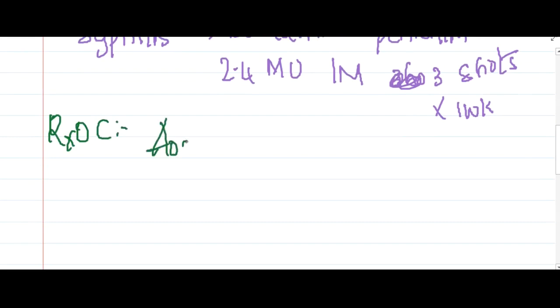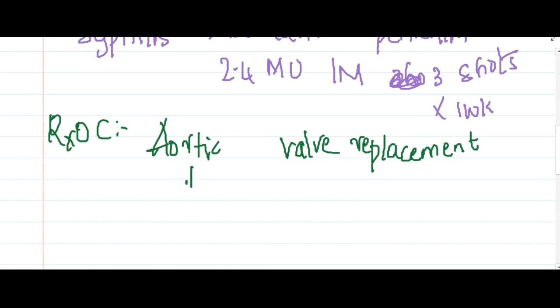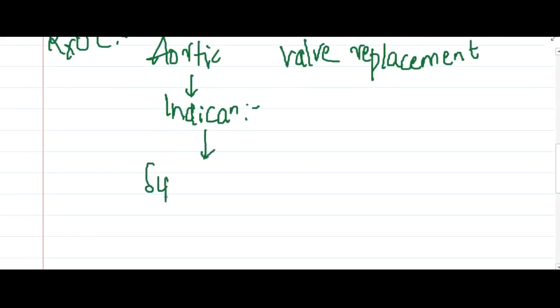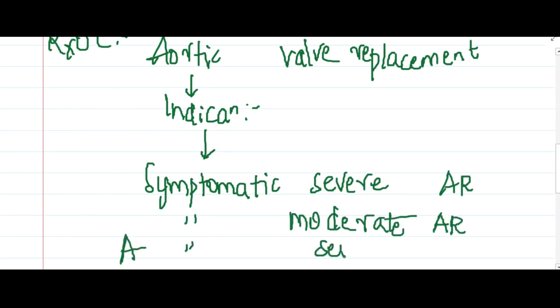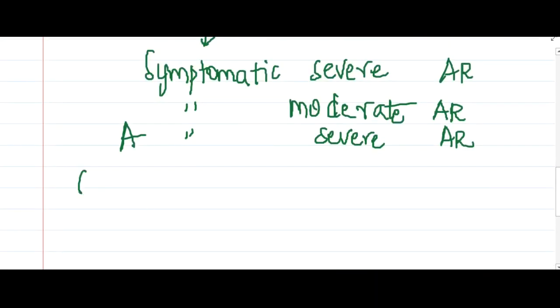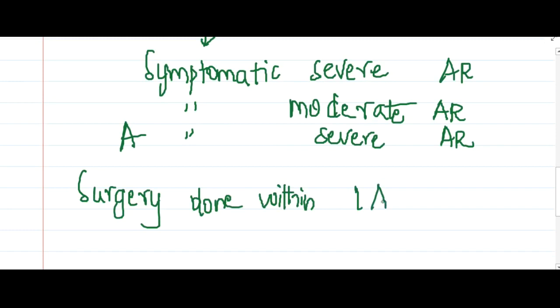The treatment of choice is aortic valve replacement. Indications include symptomatic severe aortic regurgitation, symptomatic moderate aortic regurgitation, or asymptomatic severe aortic regurgitation. Surgery should be done within 1 year of occurrence of chronic aortic regurgitation, and within 24 hours for acute aortic regurgitation.